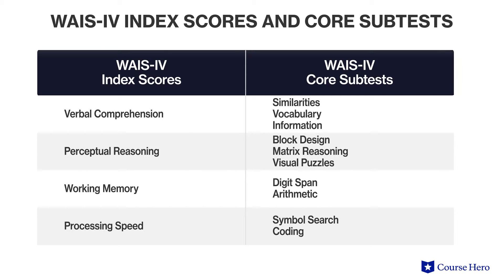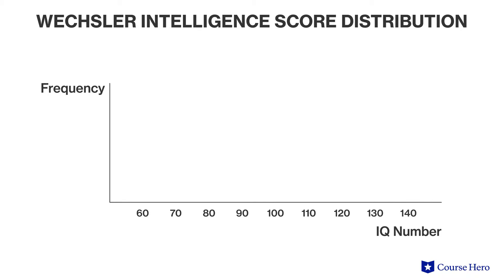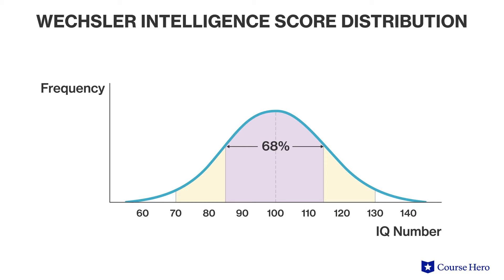The WAIS-4, which was published in 2008, generates scores relating to four major areas of intelligence: verbal comprehension, perceptual reasoning, working memory, and processing speed. The WAIS scoring is also standardized — it is designed to produce an average score of 100. Approximately two-thirds of the scores fall within the average intellectual range, which includes scores from 85 to 115. Extremely low scores reflect an intellectual disability, while extremely high scores reflect giftedness.